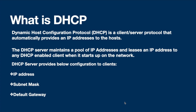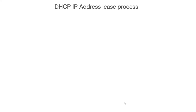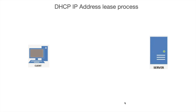Next, how does DHCP process the IP address assignment? Basically, there is a process called the DORA process. DORA stands for D-O-R-A. For example, we have one client machine and one server configured as a DHCP server, and we will discuss how this client machine will get an IP address from this server.